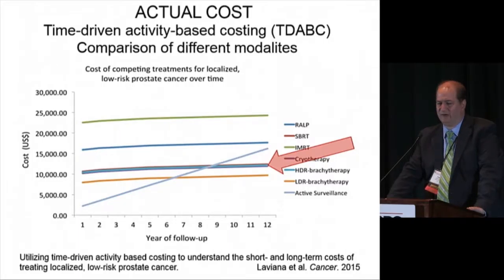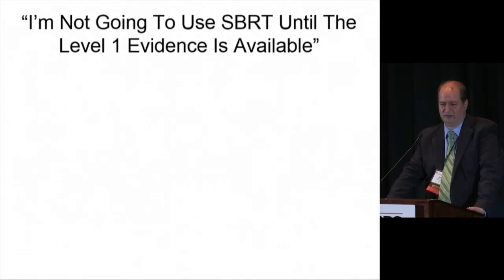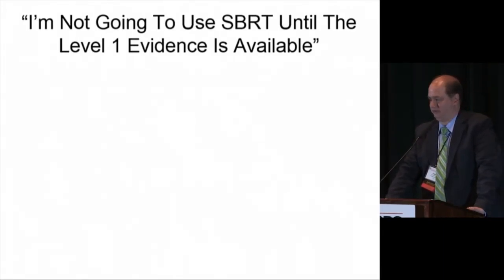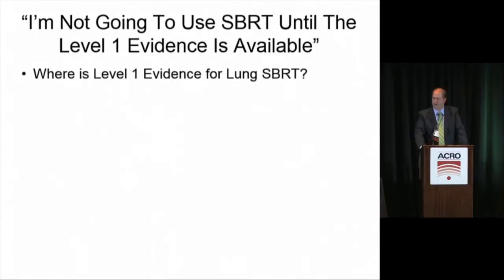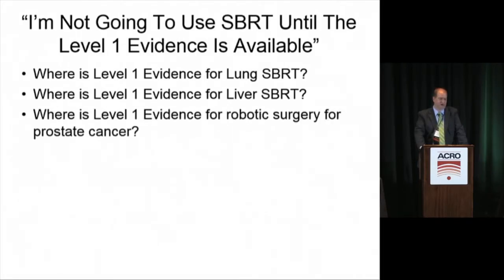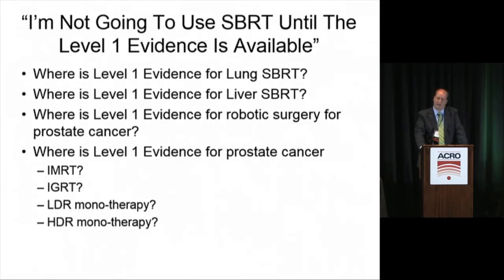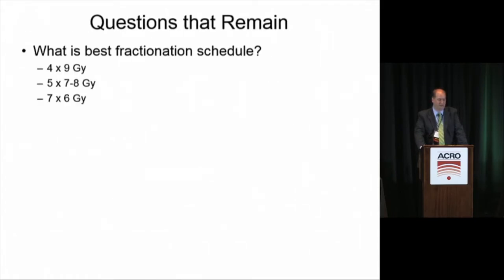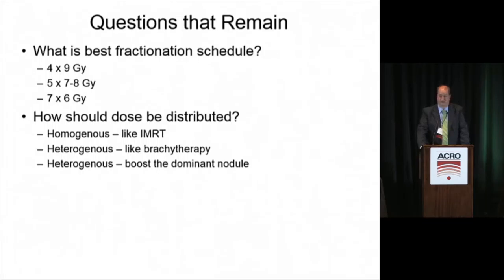Regarding cost, about eight different cost analyses show that SBRT is more expensive than LDR brachytherapy but less expensive than radical prostatectomy or IMRT, and similar to HDR. Active surveillance costs increase over time with repeat biopsies, so SBRT may be cost-effective in comparison. For those who say they won't use SBRT until level one evidence is published: where is the level one evidence for lung SBRT, liver SBRT, robotic radical prostatectomy, IMRT, IGRT, LDR monotherapy, or HDR monotherapy? Much of what we do in prostate cancer doesn't rest on level one evidence.